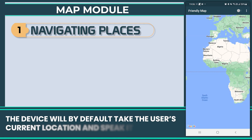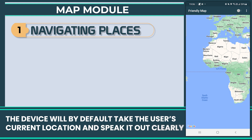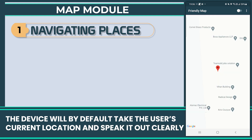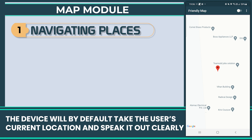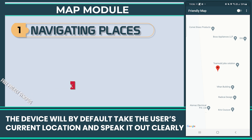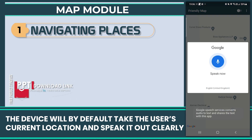The device will by default take the user's current location and speak it out clearly. The system then asks: 'Where would you like to go? Please speak your destination complete address now.' The user speaks 'Bandra West Mumbai,' and the system confirms: 'Bandra West Mumbai destination selected. Say confirm to start navigation. Say change to change destination.' The user says 'Confirm.'